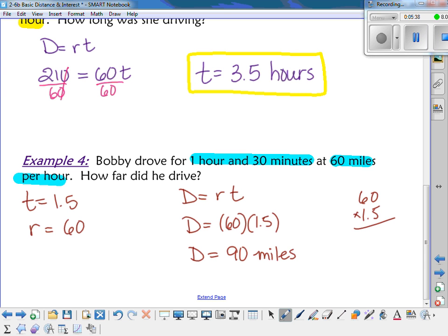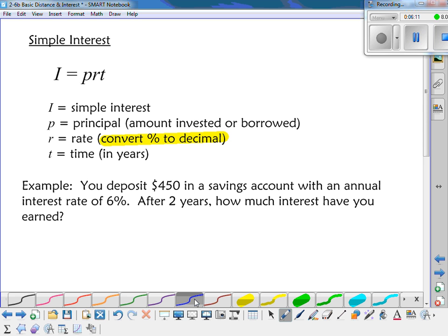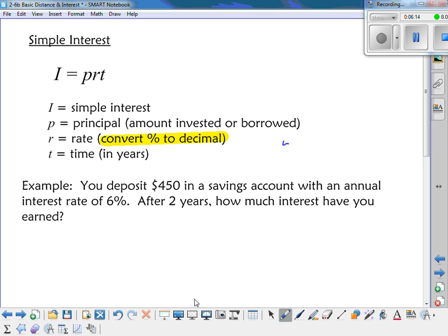So simple interest. I equals PRT. I is the simple interest. P is the principal, which is the amount that you either invested or that you borrowed from the bank. The rate, it's going to be given to you as a percent, but you have to remember to convert the percent to a decimal. So if, for instance, if the rate is, say, 5%, to make that into a decimal, what do we do? Right. We have to move it over two times. So 0.05.